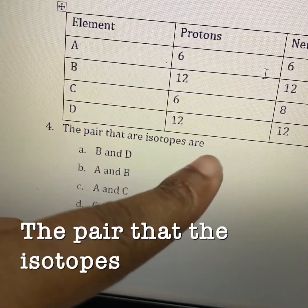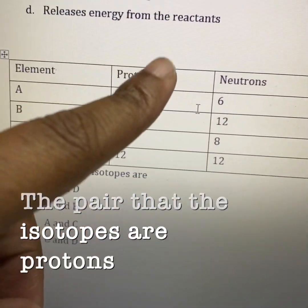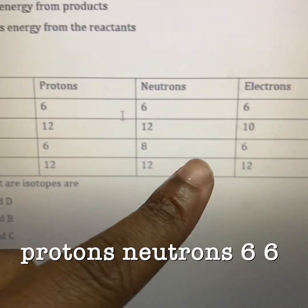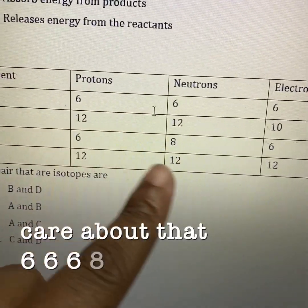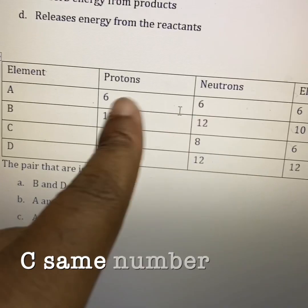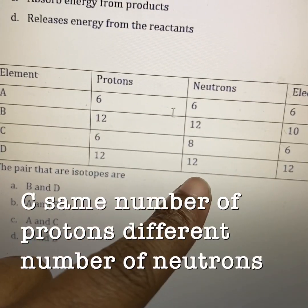The pair that are isotopes are protons, neutrons, 6, 6 electrons. We don't care about that. 6, 6, 6, 8. All right. A and C. Same number of protons, different number of neutrons.